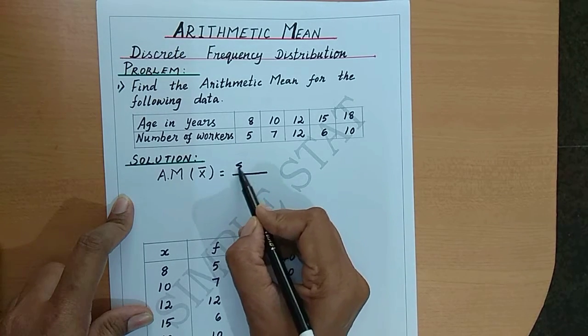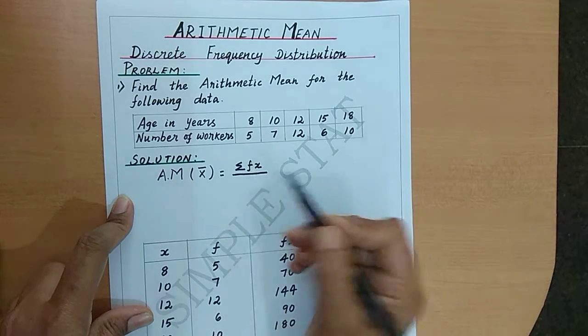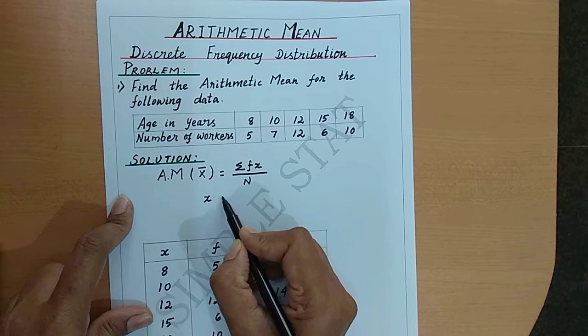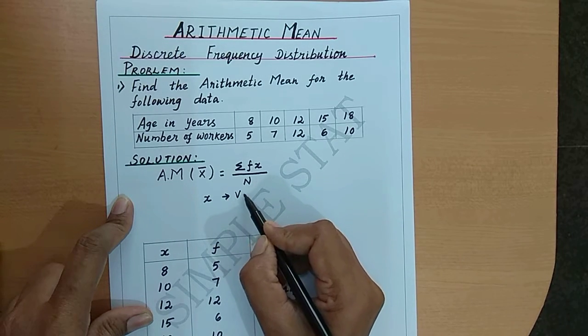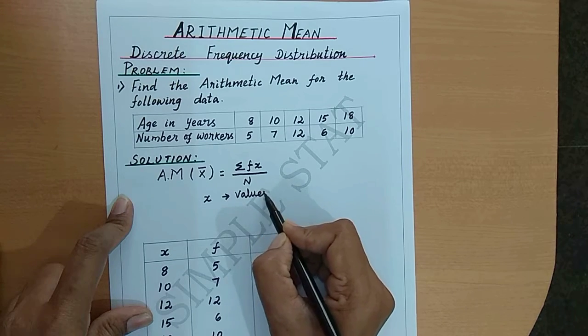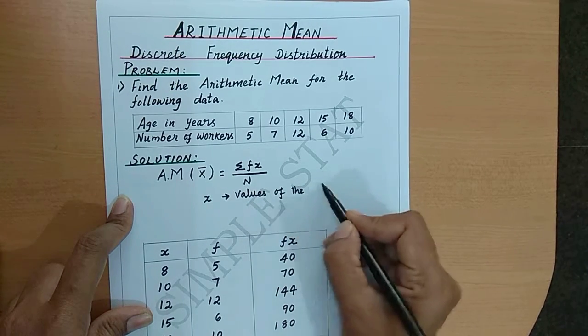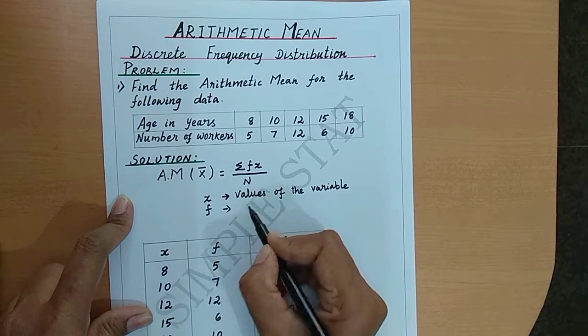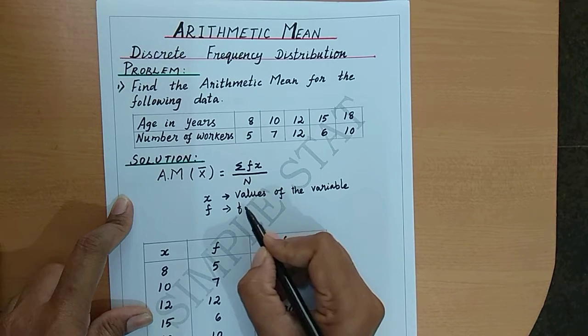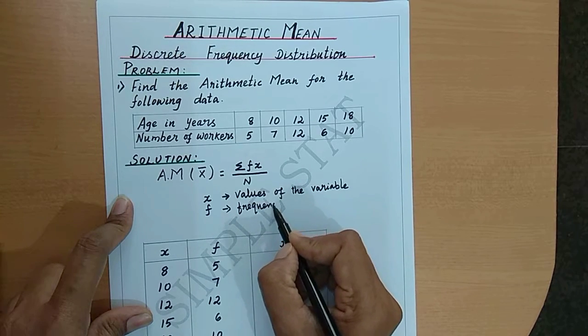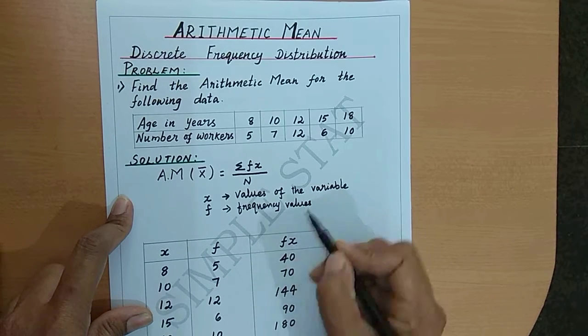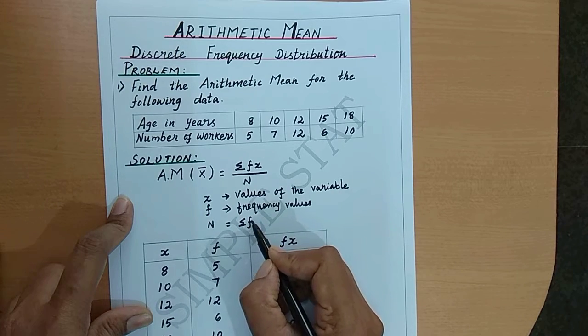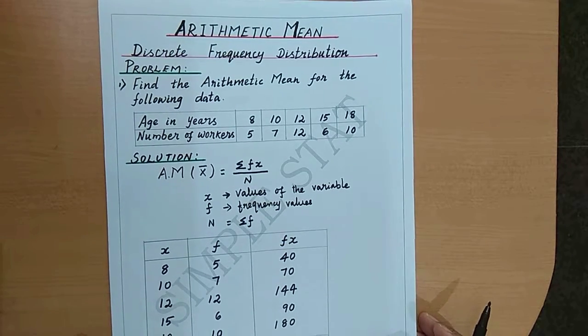Where x denotes values of the variable, f denotes frequency values, and n equals summation f, which is nothing but total frequency values. So let's now proceed with the calculation.